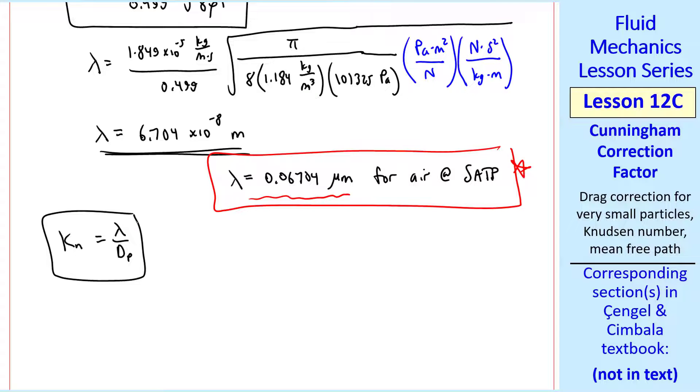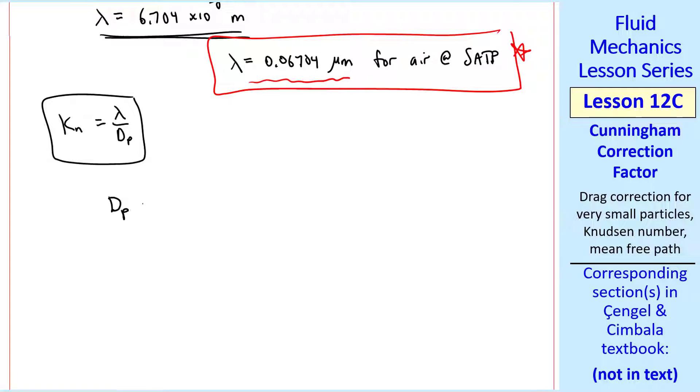Now let's calculate the Knudsen number. We'll look at various particle diameters. So I'll make a table of particle diameter in microns and Knudsen number. We'll calculate Kn for these five values of dp.